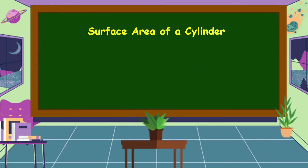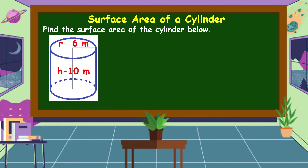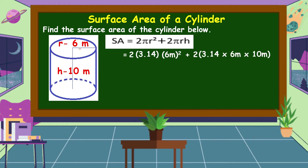Next, we're going to discuss the surface area of a cylinder. Find the surface area of the cylinder below with a radius of 6 meters and a height of 10 meters. The formula is SA = 2πr² + 2πrh. Substituting: 2 × 3.14 × (6 m)² + 2 × 3.14 × 6 m × 10 m. This gives 6² = 36 m² and 6 × 10 = 60 m².